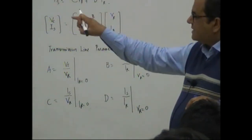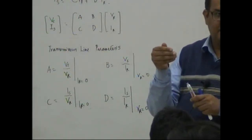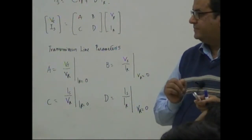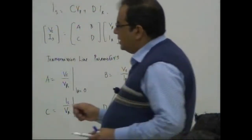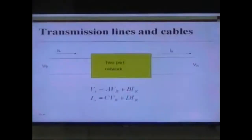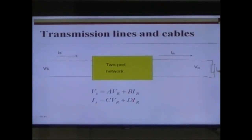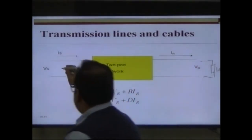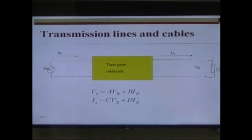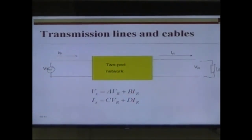This is a per-phase representation. We have only one phase represented for our three-phase transmission line. Of course, if you have this network, then at the output across the two terminals you would have a certain load, and this is how power would flow through the line.